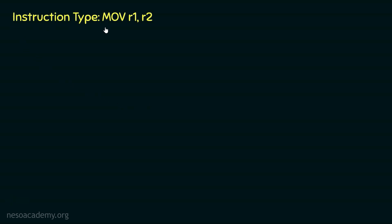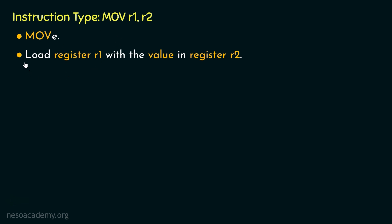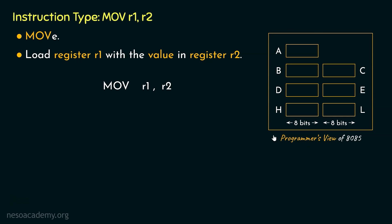Coming to the instruction type MOV R1,R2 — the mnemonic MOV stands for MOVE. What does it mean? It means we are supposed to load register R1 with the value in register R2, where both registers are specified in the instruction. Let's decode the instruction: we have the mnemonic MOV, then R1 which is a register, then a comma, and finally R2 which is another register — the same registers from the incomplete programmer's view of the 8085. In this instruction, R2 is the source of the data to be moved, and R1 is the destination.